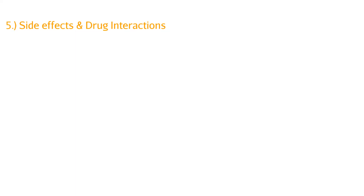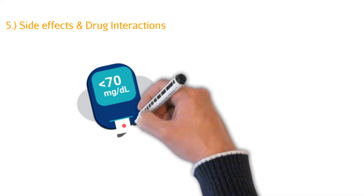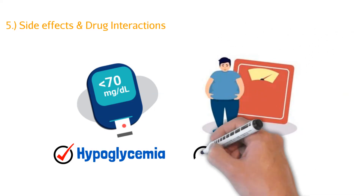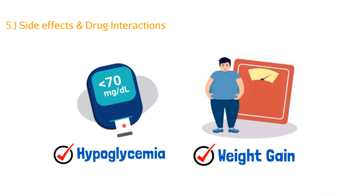Now let's talk about side effects — this part is a lot easier. The first thing to worry about is hypoglycemia, meaning low blood sugar. If you put too much insulin into your body, your glucose levels will drop, and a patient can start shivering and even pass out. The second side effect is unfortunately weight gain. Insulin is a hormone that has a role in adipose tissue development and movement, so introducing more insulin to someone's body leads to weight gain.